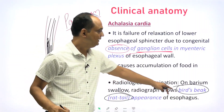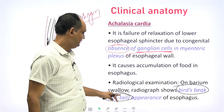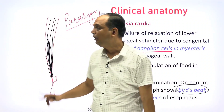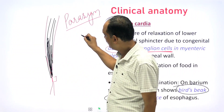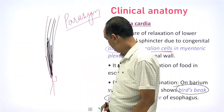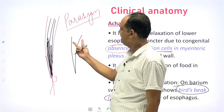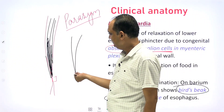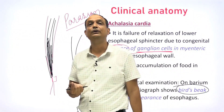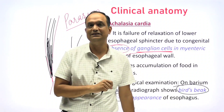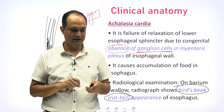The bird beak, parrot beak, or rat tail appearance all show a pointed lower end with a dilated upper part. The pointed narrowing at the lower end is due to failure of relaxation. This condition is known as achalasia cardia.